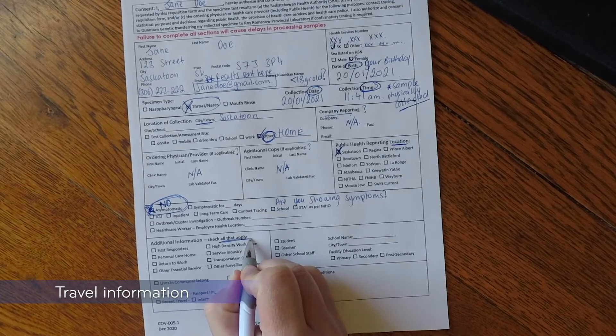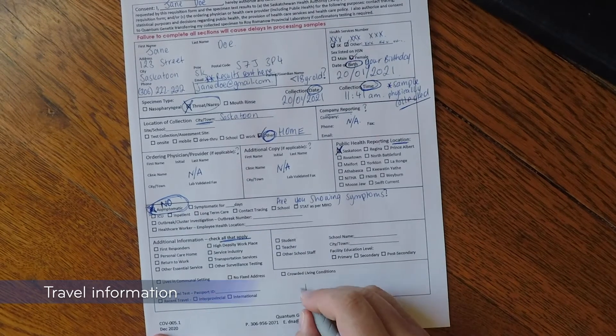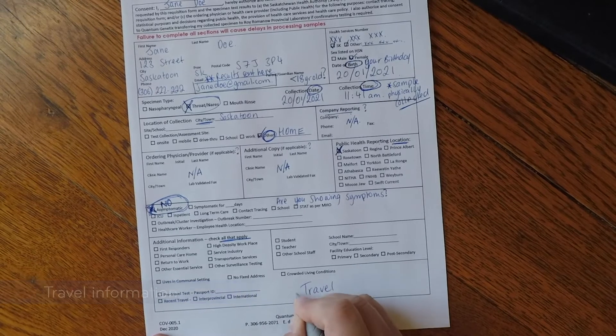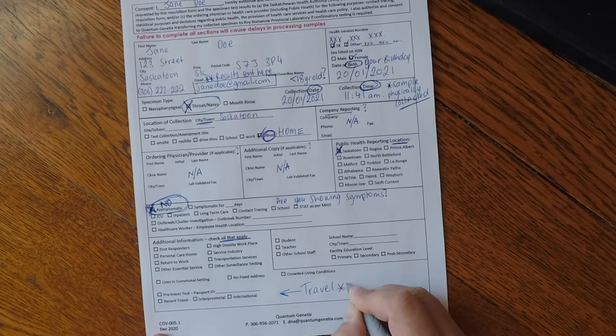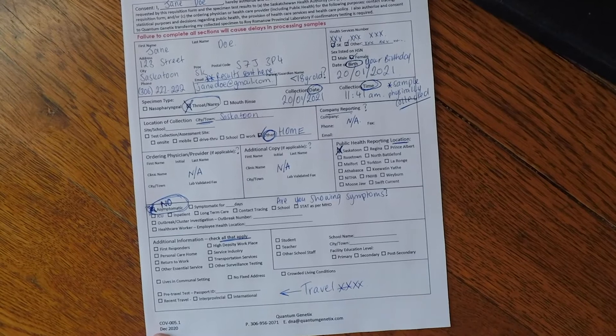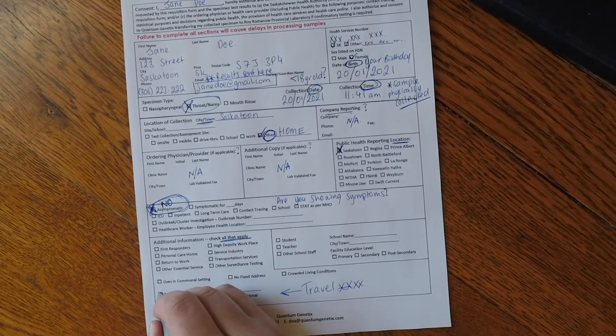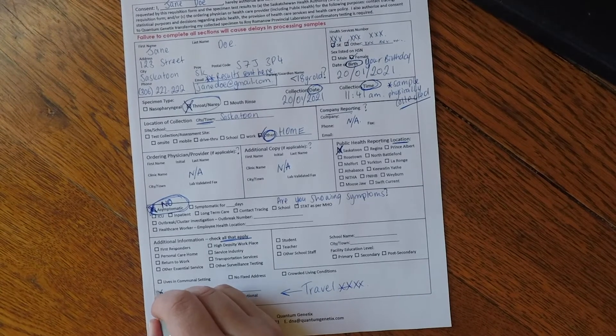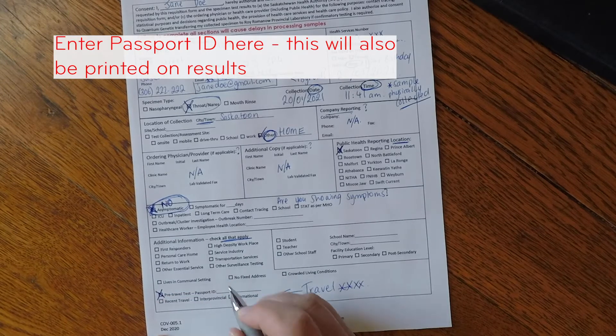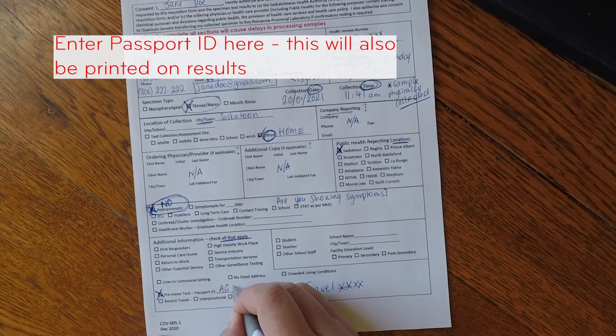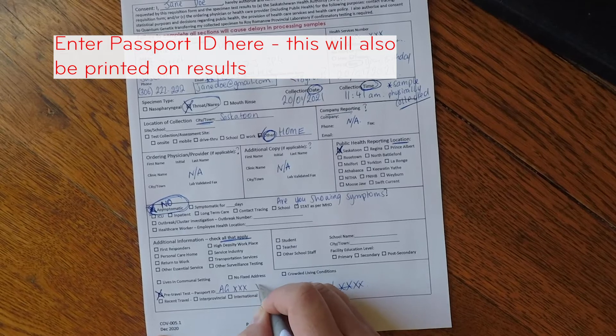Then move down to the additional information section. Please check all boxes that apply. For travel purposes please tick pre-travel test and write your passport ID clearly. This ID number will also be present on your results for travel purposes.